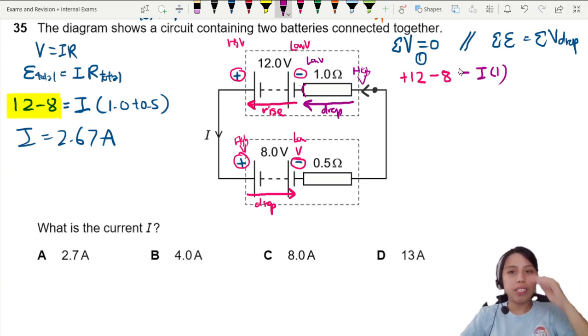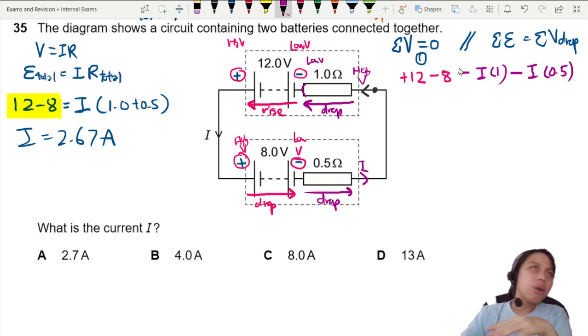Remember, current will flow from high potential to low potential. Then one more down here - I'm traveling from here to here following direction of current, so from high to low, it's going to be a drop. So for drop I put minus current times R.